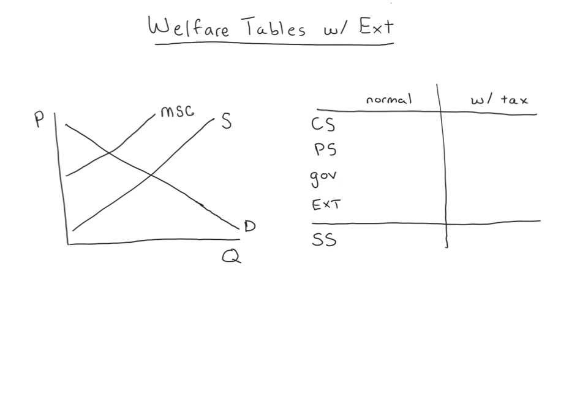First I need to do some labeling. Here's our market quantity — Q market — and I can label the market price here, P star. If I put a tax in place, I'd want to put the tax wedge in so that we get to the efficient quantity. But first you've got to identify the efficient quantity. We can see the marginal social cost curve is already labeled for us, and it's basically the supply curve shifted upward because there's a negative production externality. But we don't have the marginal social benefit curve labeled — so where is that?